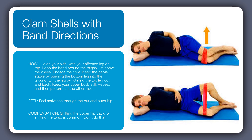Next are clamshells with band. Lay on your side, support your head with your arm or a pillow, and wrap the band around the knees or just above the knees on the thighs. Bend the knees with the heels in line with the hips. Then draw the knee up towards the sky, feeling the resistance in the band, either holding at the top or doing sets.